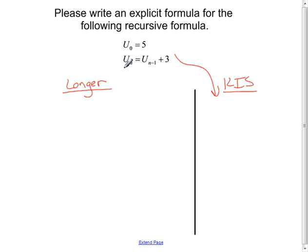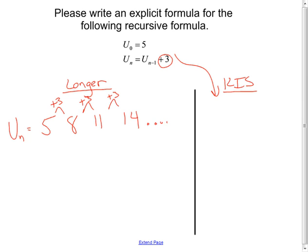I'm going to generate the first couple elements of this sequence. Starting with u sub n: the first one is 5. Then by looking at the common difference, to get the next one I add 3 to the previous one — which gives me 8. Add 3 again to give me 11. Add 3 again to give me 14, and it would continue on.